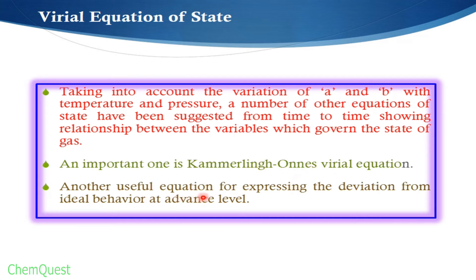One of them is the Kamerlingh Onnes virial equation, which we are going to study. This is another useful equation for expressing the deviation from ideal behavior at advanced levels. With the passage of time, equations evolved: first the ideal gas equation, then the van der Waals equation studied at Grade 12 level, and now Kamerlingh Onnes proposed an equation called the virial equation to study the real behavior of gases showing deviation from ideality.